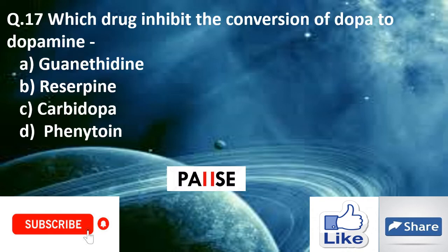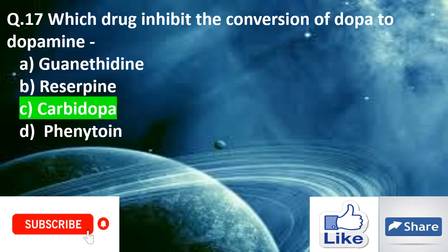Question seventeen: Which drug inhibits the conversion of dopa to dopamine? Option A: guanethidine, option C: carbidopa, option D: phenytoin. The right answer is option C: carbidopa.